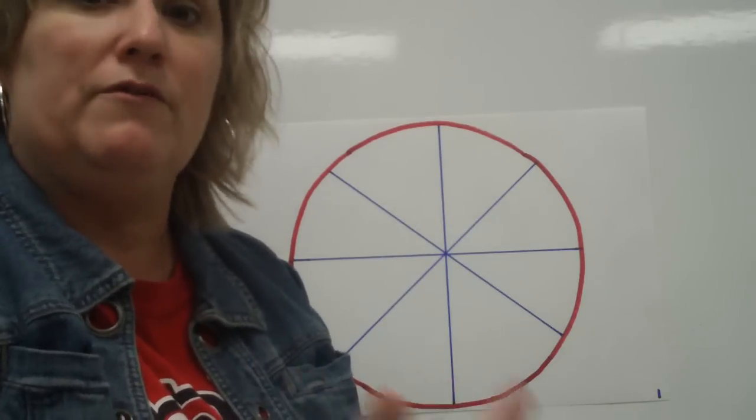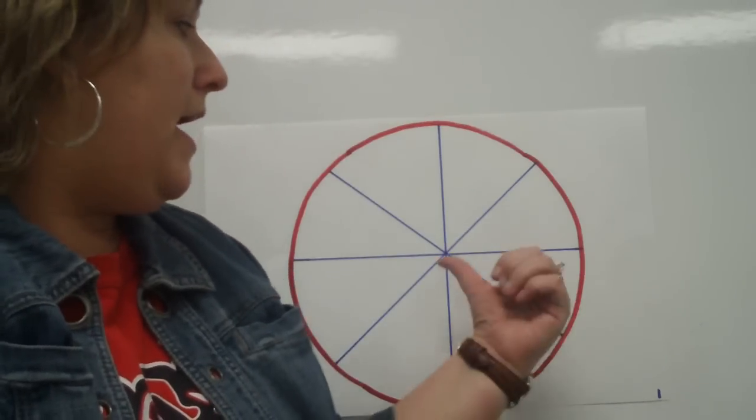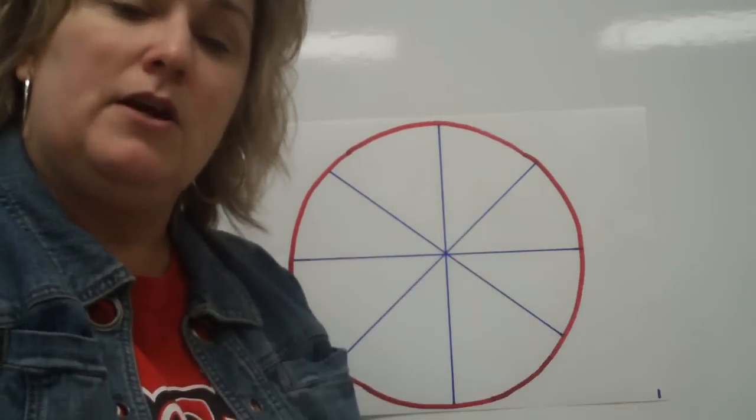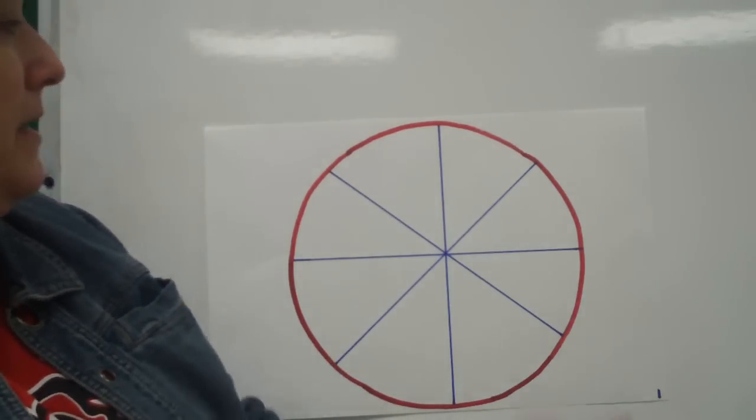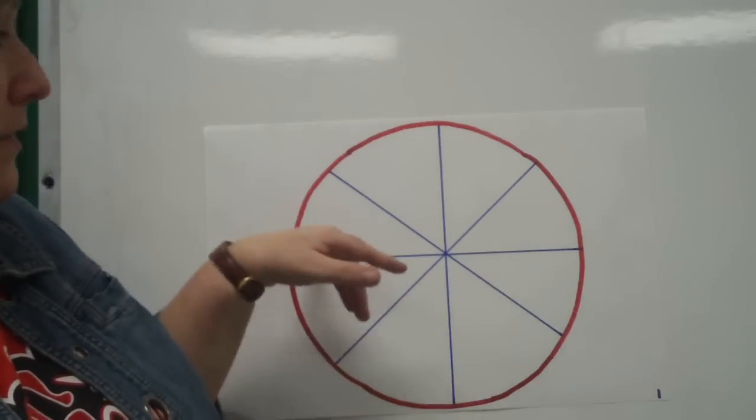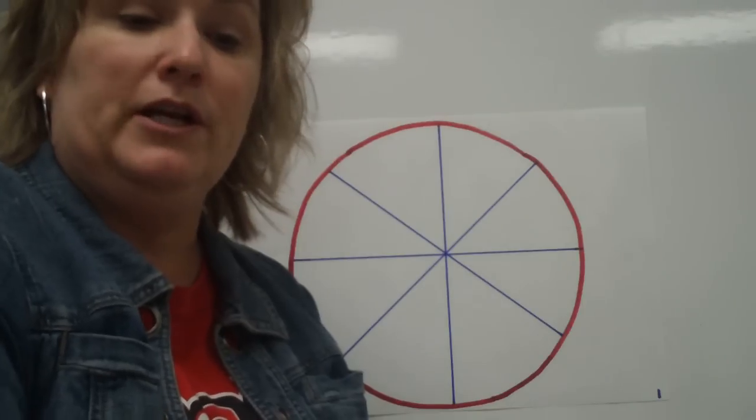What you have is I've given you an organizer that has a big circle on it. With that circle, I want you to take it and divide it into eight pieces just like I've done here with mine. And each one of these pieces will have a vocabulary word in it.